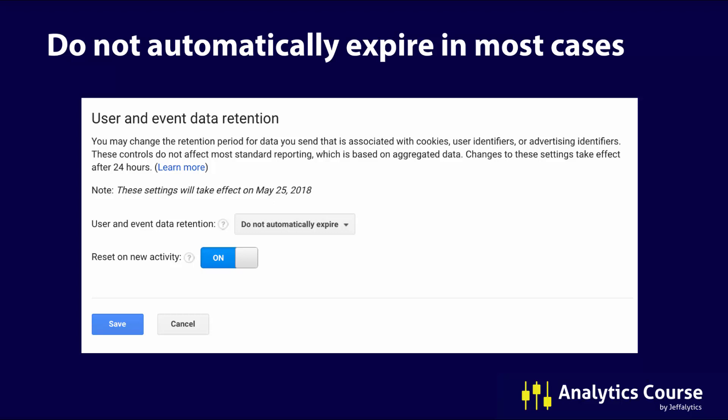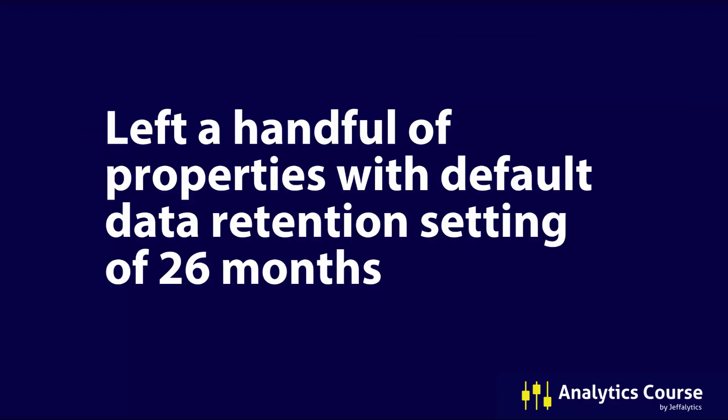Hopefully you're watching this video in time to put this setting in place before the May 25th deadline, so you won't lose any historical data if you want it for analysis. Now, you might be fine if you don't change the setting — I left a handful of properties with the default data retention setting of 26 months. Not everything needs historical analysis. Maybe you have a website just for traffic or experimentation, and it's not mission critical. If you're not doing segmentation and just looking at overall traffic numbers, the aggregated reports aren't being changed anyway.